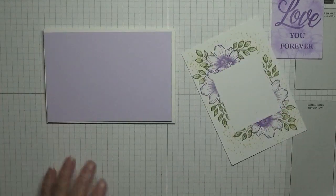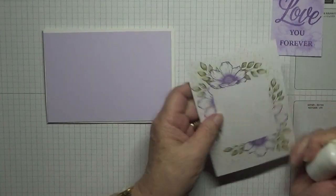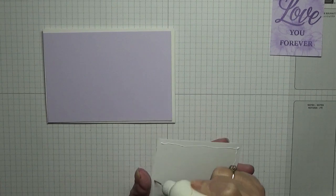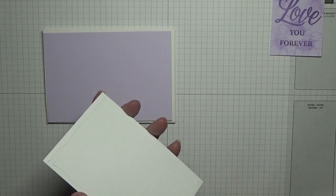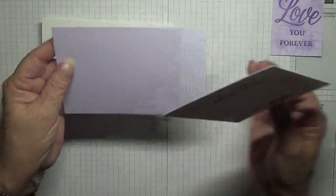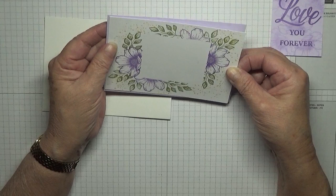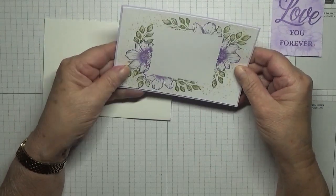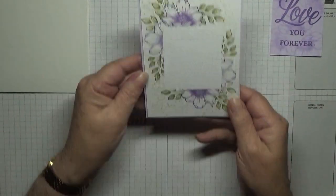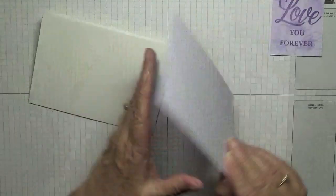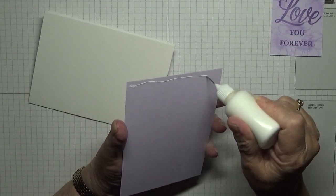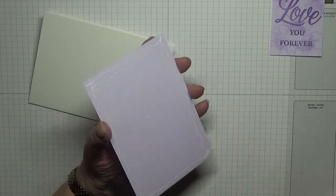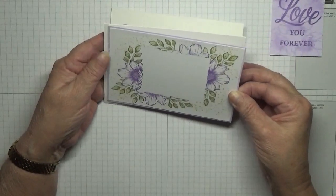Let's get this put together. I'll glue this to our purple posy mat. I'll glue this on the card base.